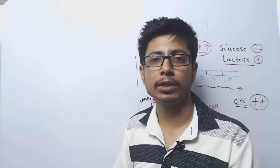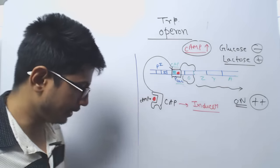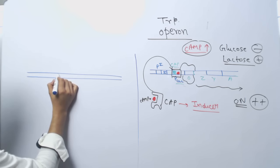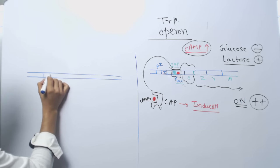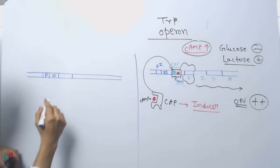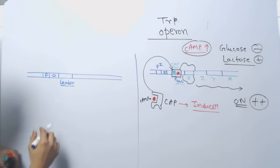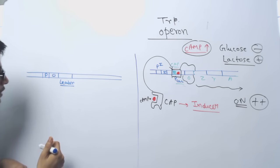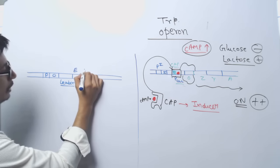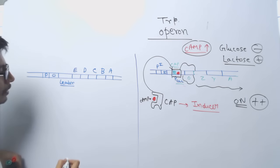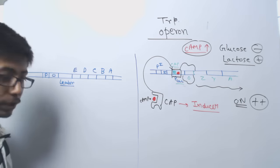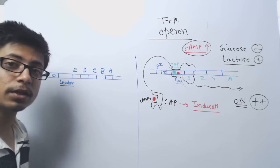All the genes that code for these different proteins are under one promoter known as the tryptophan promoter or TRP promoter. Looking at the structure: we have the promoter P, then the operator, then a stretch of DNA known as the leader region, and right after that five structural genes — E, D, C, B, and A. These five structural genes code for five different proteins, all required for the synthesis of tryptophan.